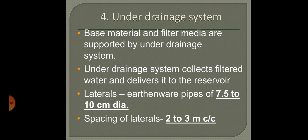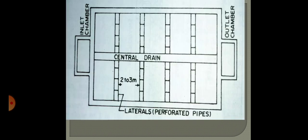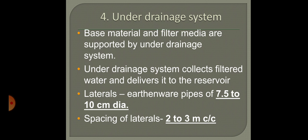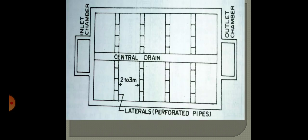The filter media and base materials are supported over an under-drainage system. This system collects the filtered water and delivers the clean water to the reservoir. The lateral drains are made of earthen pipes or perforated pipes of about 7.5 to 10 centimeters in diameter, or patented drain devices, spaced at 2 to 3 meter centers.